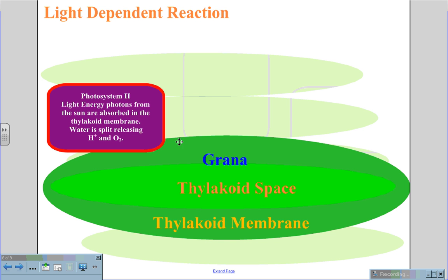There are three processes that take place during this light-dependent reaction. The first is photosystem II, where light energy photons from the sun are absorbed in the thylakoid membrane. This causes water to split, releasing hydrogen and the oxygen.